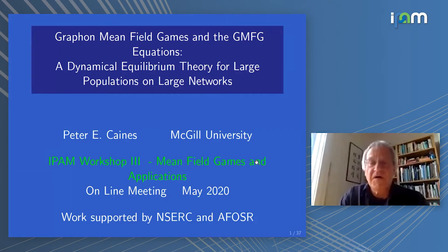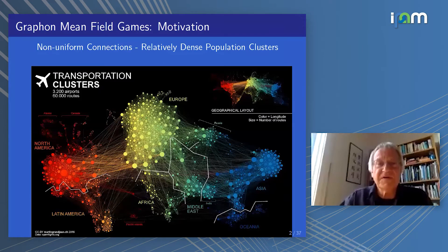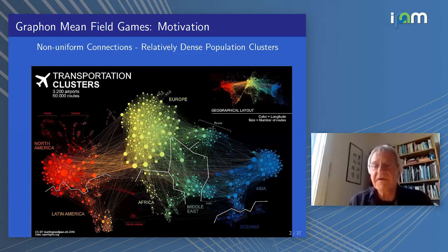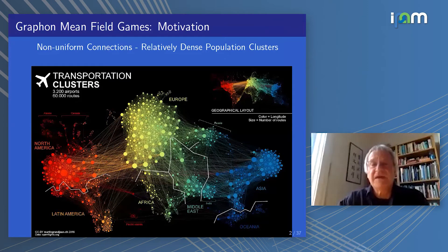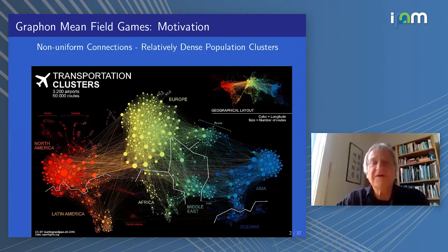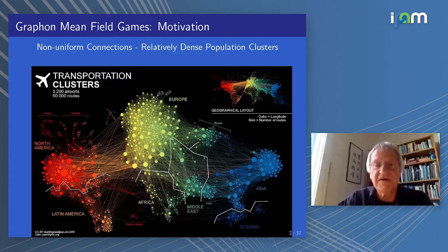This is a collaborative work in virtually everything I'm going to talk about. If we look at this portrayal of air transportation links from 2016, with connections between airports in Europe, North America and Asia, one thing that strikes us about this large network is that the connections are non-uniform and that there are relatively dense population clusters. This is a very large-scale network and, as we know recently, it has been almost closed down because of the current pandemic.